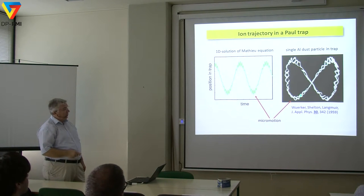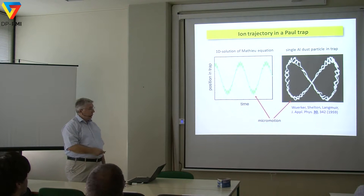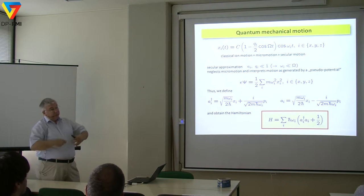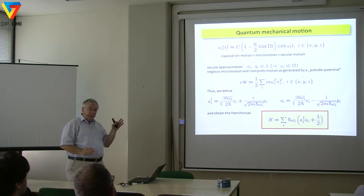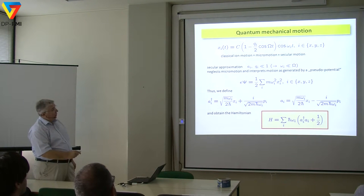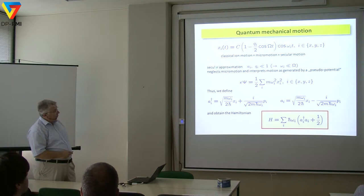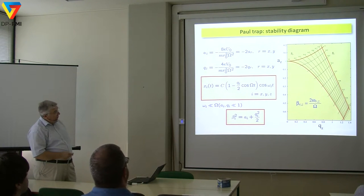The quantum mechanical description is taken by approximation. You write down this trajectory — the micromotion plus the secular motion. The secular approximation holds only for A and Q values much smaller than 1. For calcium ions, to give you an example, capital Omega is on the order of 20 MHz, and the secular frequencies lowercase omega are typically about 1 MHz — a ratio of at least 1 to 20. You can then write down the pseudo-potential as pure harmonic motion.